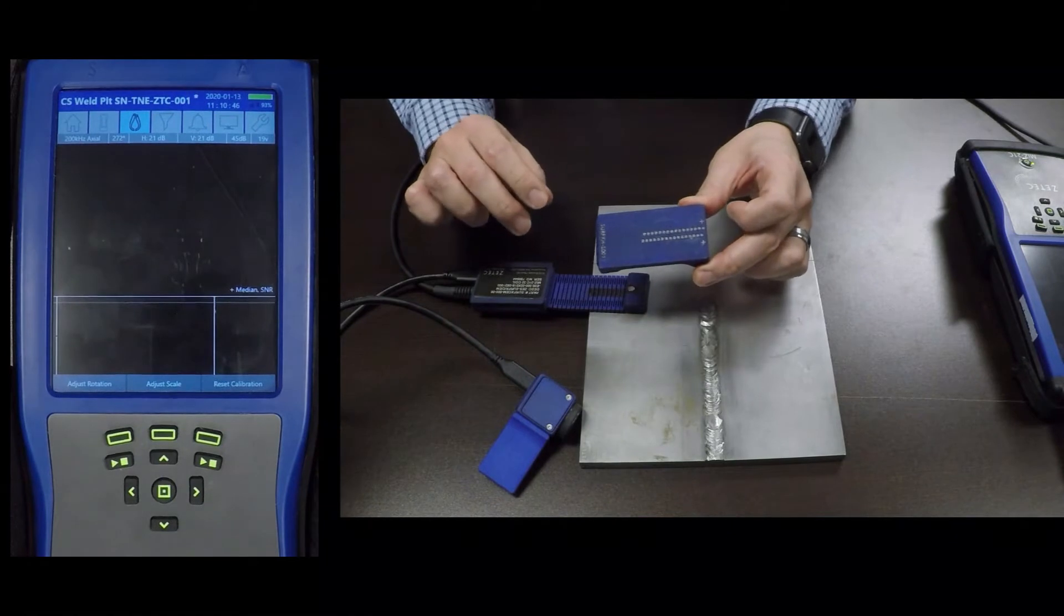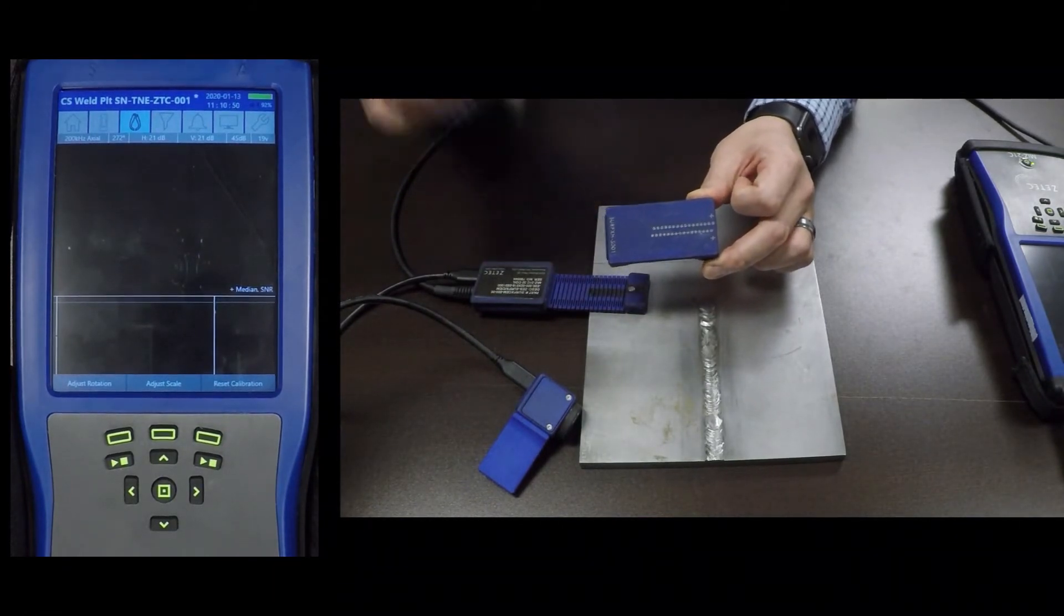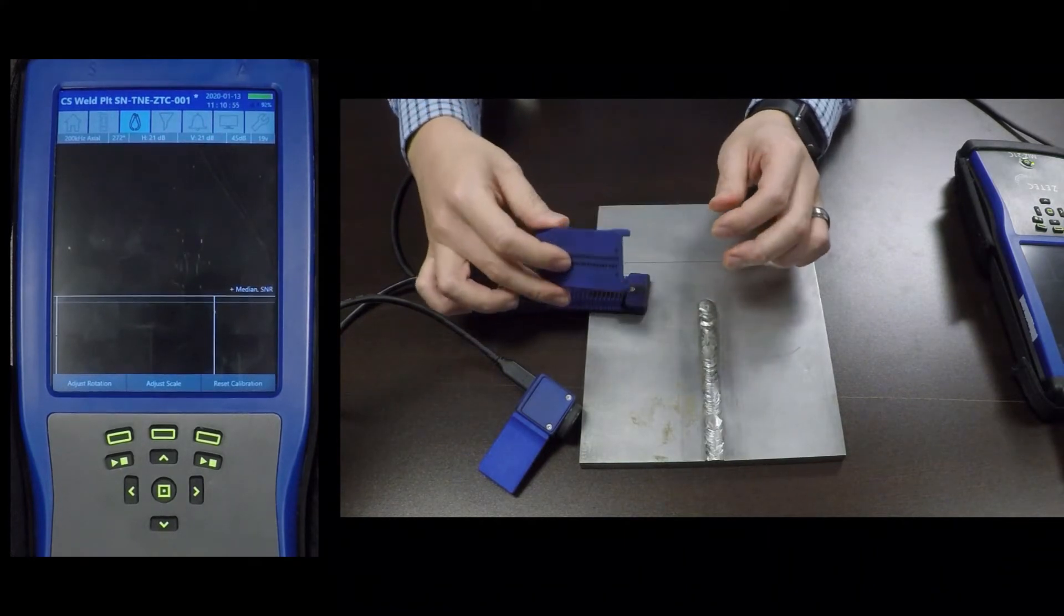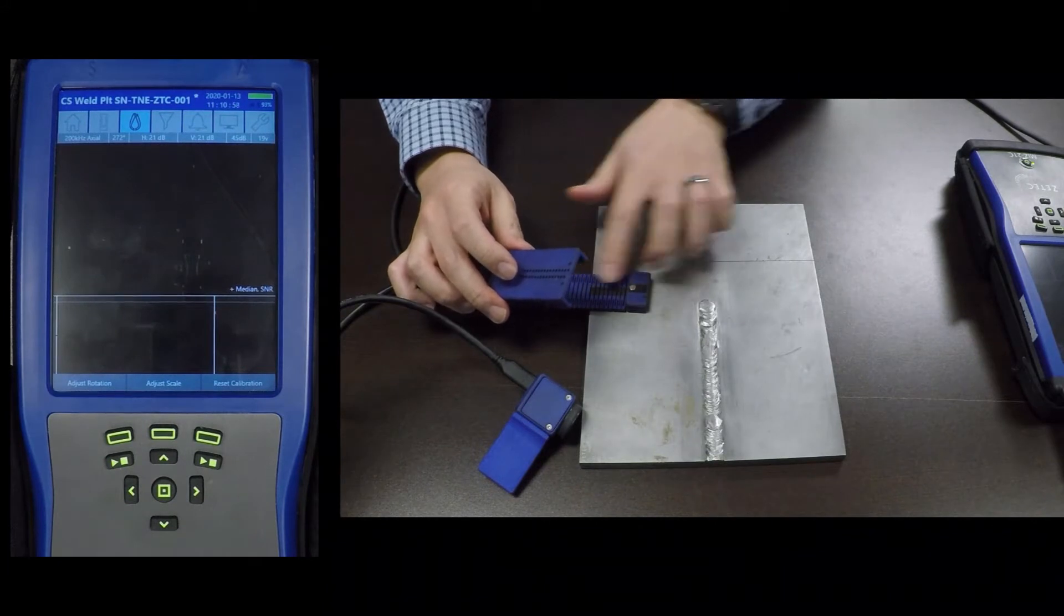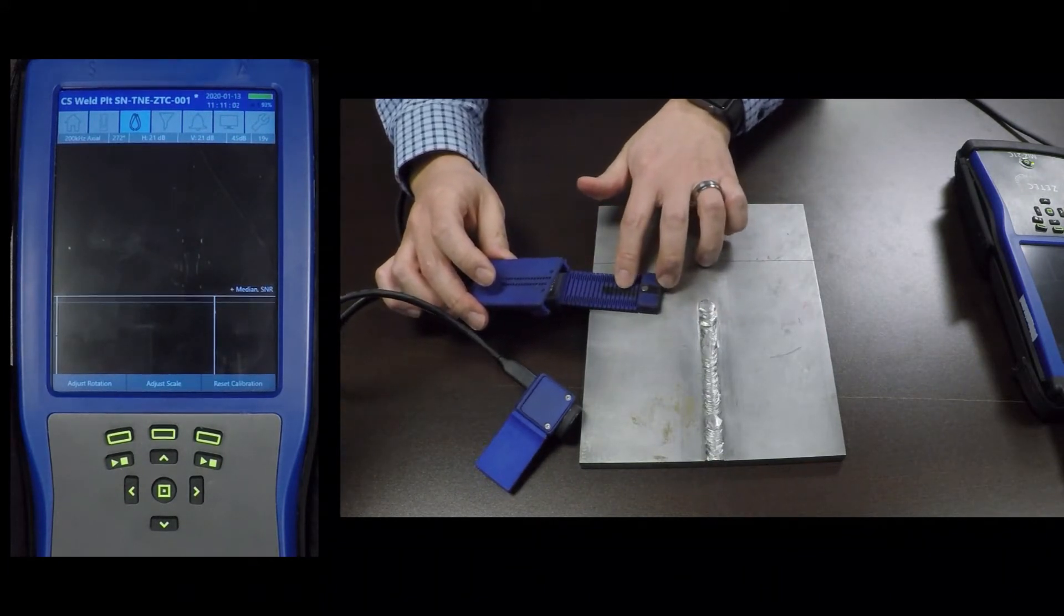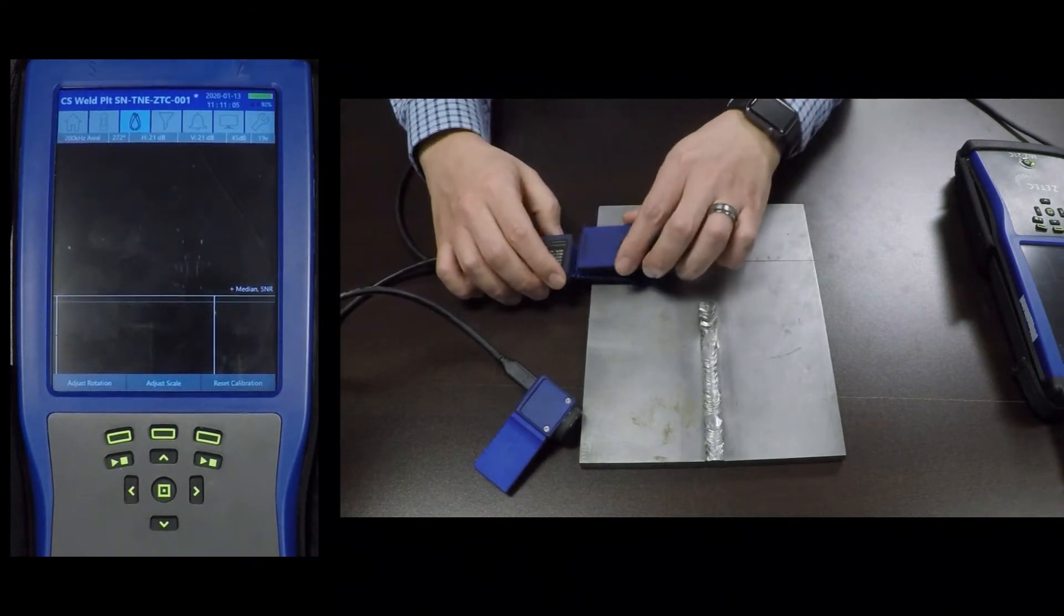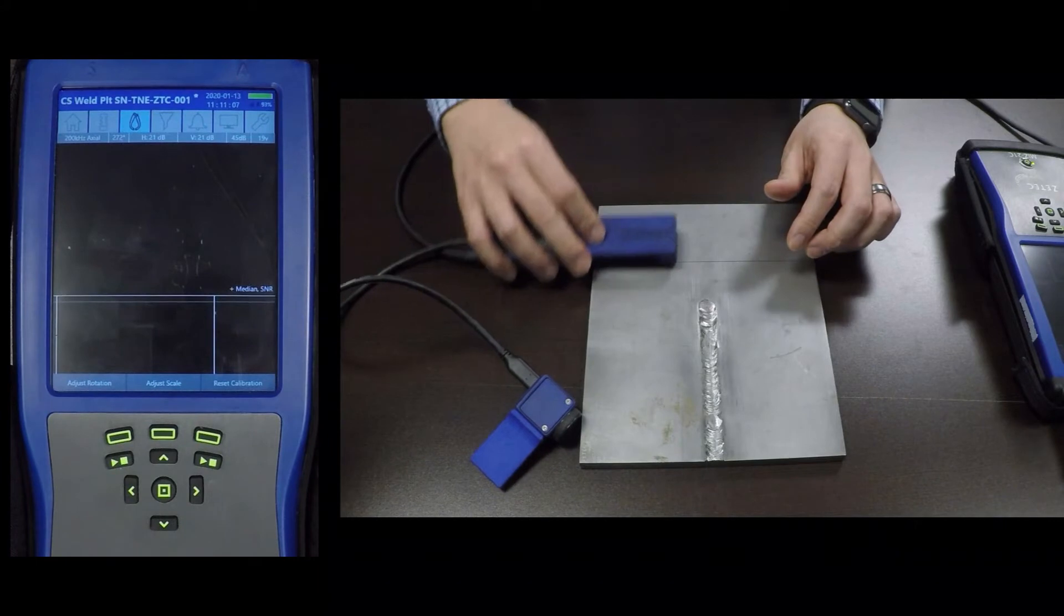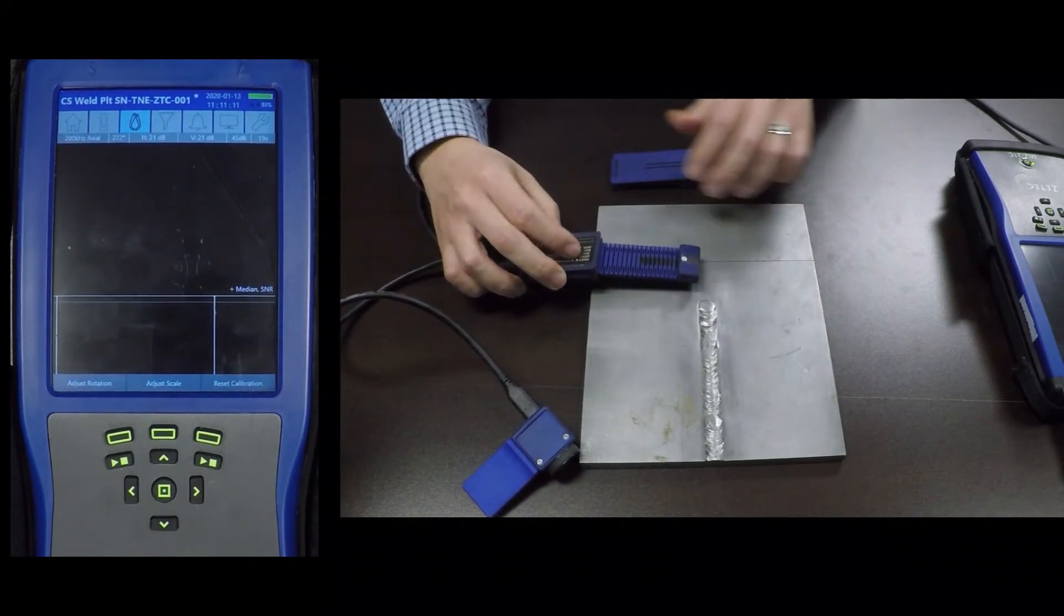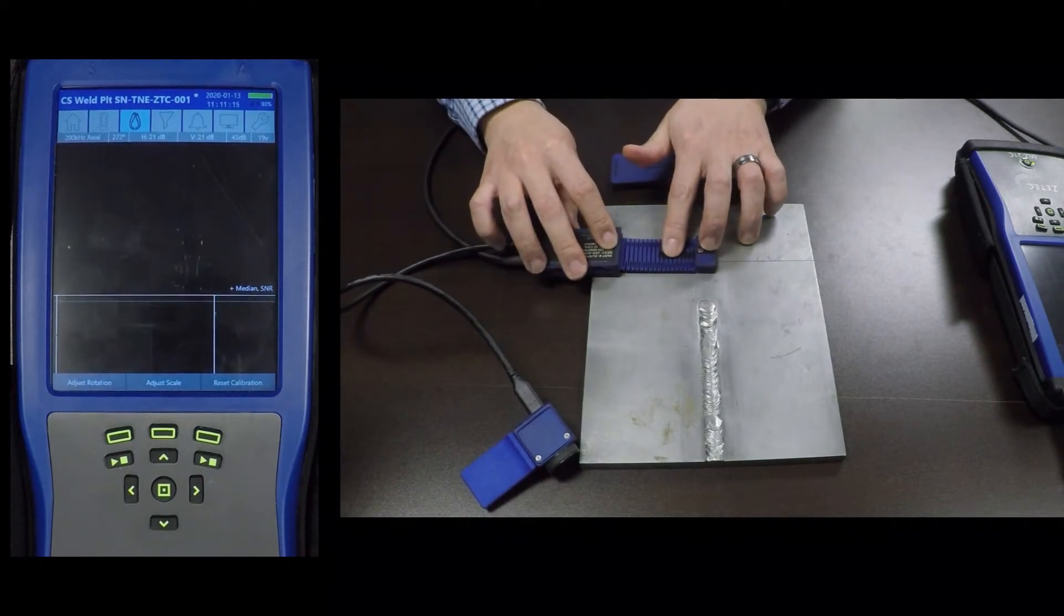The surface weld probe comes with a handle and this handle basically allows for even application of pressure along the coils for better results and also it allows you to scan with just one hand, whereas without the handle basically requires two hands to scan.